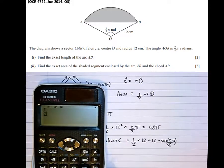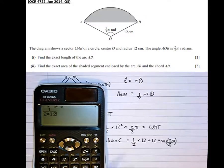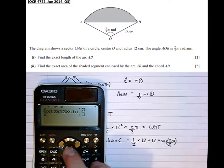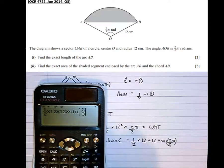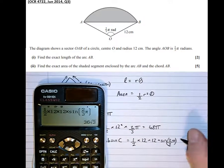One half times 12, let's get that right, half times 12 times 12 times sine of 2 thirds pi, which is equal to 36 root 3.